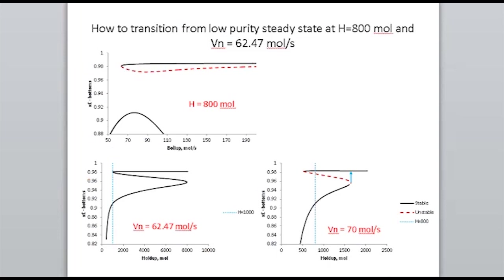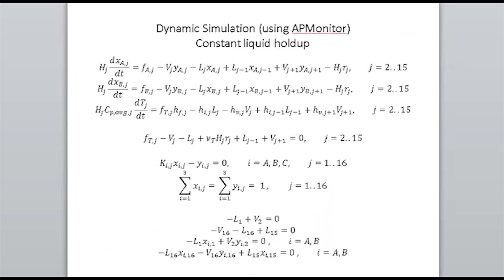Looking again at the bifurcation paths: at the conditions with boil-up modified and a fixed holdup of 800, there is an advantage to increasing the boil-up to 70 moles per second in that the S-curve becomes contracted, so where that blue arrow is we can potentially move to the desired high-purity steady state at a holdup of about 1600 to 1700. We can't change the holdup in a distillation column directly, but we can reduce the feed to get the entirely equivalent output to increasing the holdup.